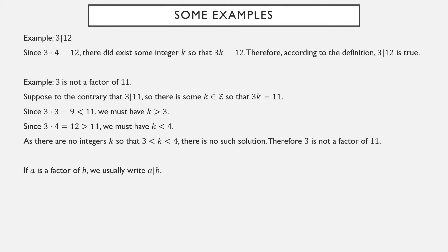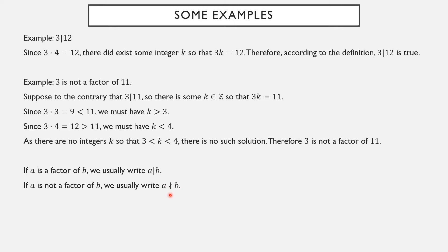If a is a factor of b we typically use this vertical line notation. If a is not a factor of b, we strike out the symbol — the vertical line but struck through.